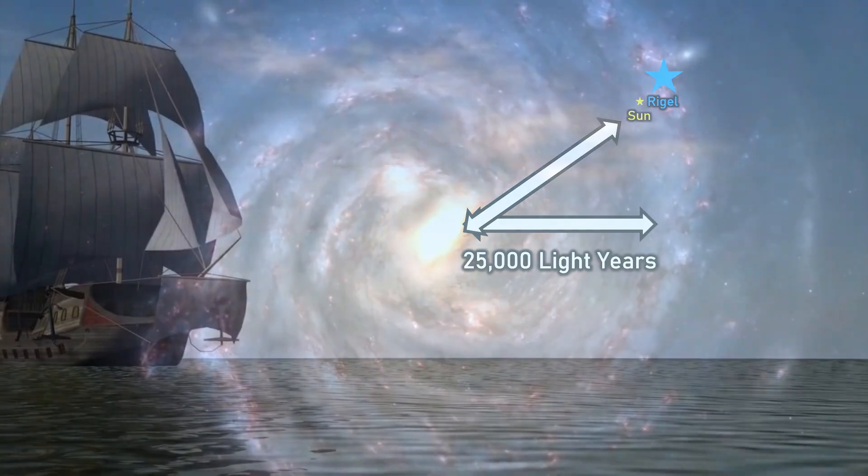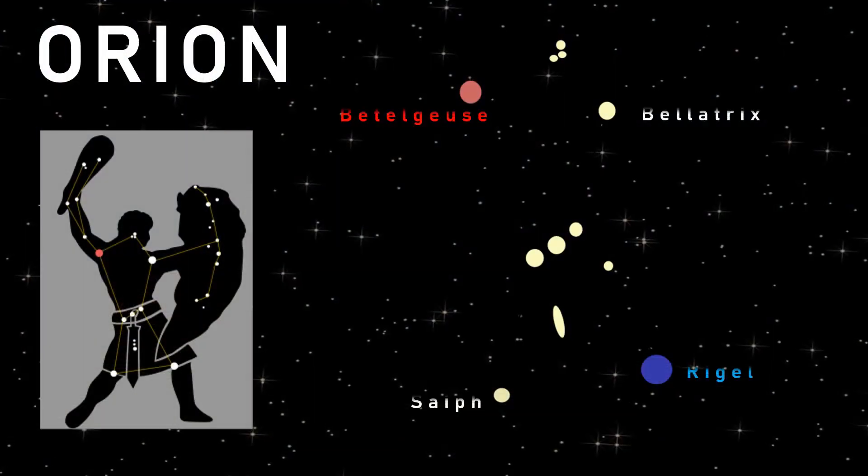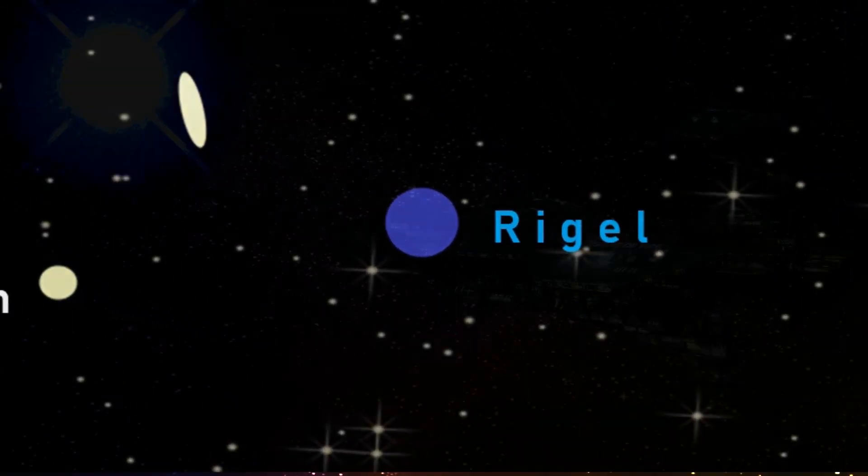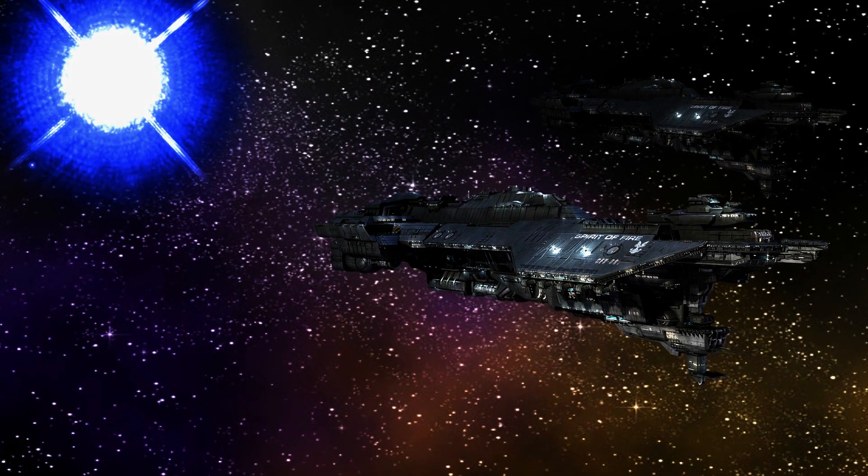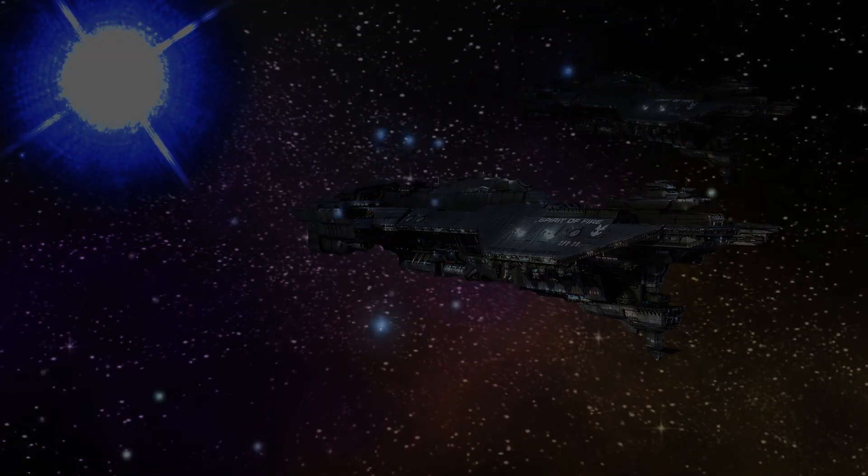Throughout history, Rigel has been a vital navigational aid for Earth sailors and travelers, thanks to its prominence in the Orion constellation. But it's not going to end there. As space exploration extends beyond our solar system, because of its sheer luminance, the future Rigel will continue to serve as a crucial waypoint for interstellar navigation. Spacecraft of the future could well be relying on Rigel's position and proper motion to determine their location and orientation in space.